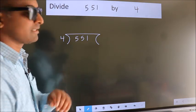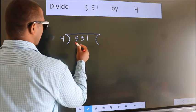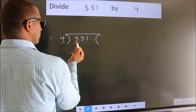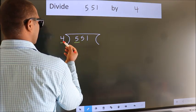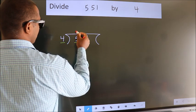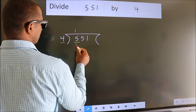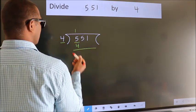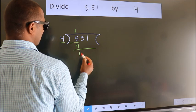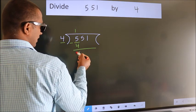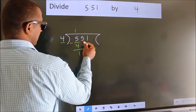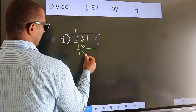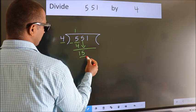Next, here we have 5, here 4. A number close to 5 in the 4 times table is 4 once 4. Now we should subtract — we get 1. After this, bring down the beside number, so 5 down, so 15.